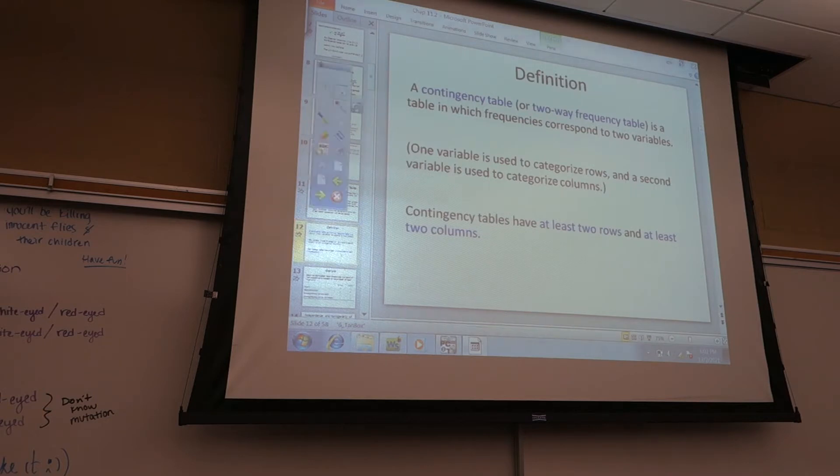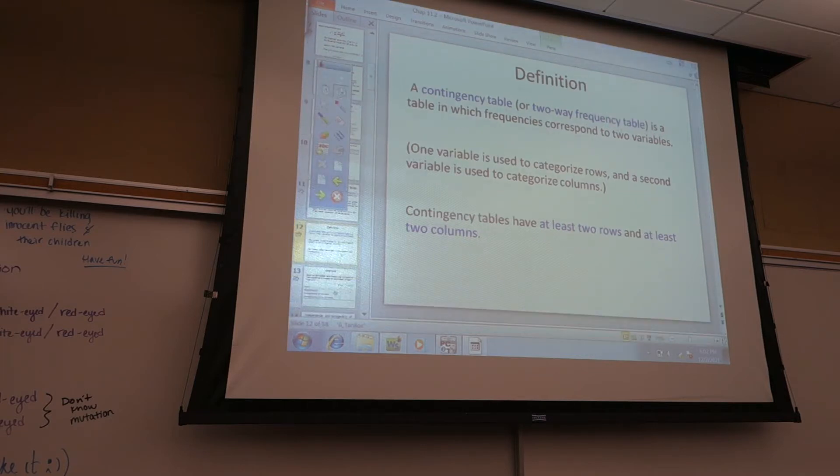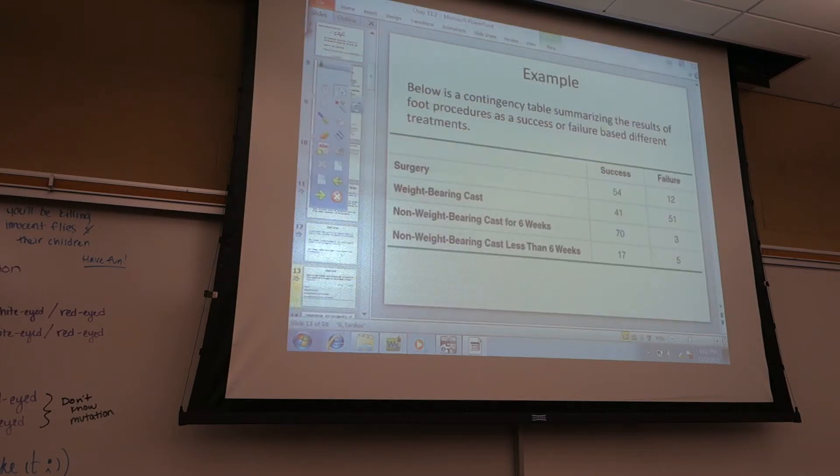Definition. Isla, go ahead. A contingency table or two-way frequency table is a table in which frequencies correspond to two variables. One variable is used to categorize rows and a second variable is used to categorize columns. Contingency tables have at least two rows and at least two columns.